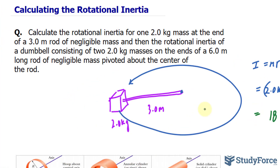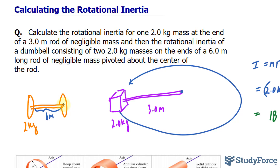Let's continue with the second part, the dumbbell. The dumbbell is like the ones you would find at a gym, where you have a 2-kilogram mass here, and the rod is 6 meters between the two weights, and another weight on the other end. They want us to calculate the inertia for the masses being pivoted at the center of the rod, which means the radius is 3 meters.